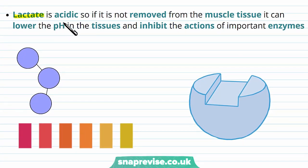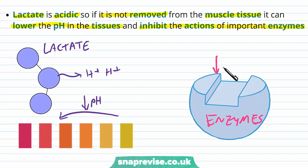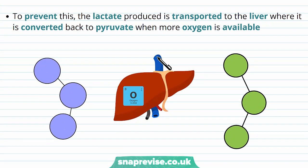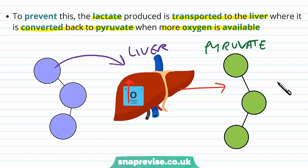The problem with this reaction is that lactate is an acidic molecule — also called lactic acid. If it's not removed from the muscle tissue, it can lower the pH and inhibit the actions of important enzymes. To deal with this, the lactate produced is transported to the liver, where it's converted back to pyruvate when more oxygen is available. The liver is very good at dealing with toxic products, and once oxygen is available again, pyruvate can re-enter glycolysis and aerobic respiration.